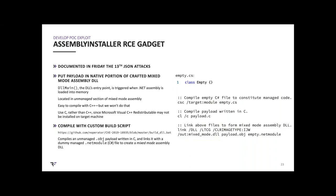AssemblyInstaller is an RCE gadget because it performs operations when setting its path member that facilitate executing arbitrary code. As documented in the 'Friday the 13th JSON Attacks' presentation, we can craft a mixed mode assembly. Inside that DLL we can put arbitrary code inside the DLL main function — the DLL's entry point — which is triggered when the assembly is loaded into memory. It's located in the unmanaged section of the mixed mode assembly inside the native code section.